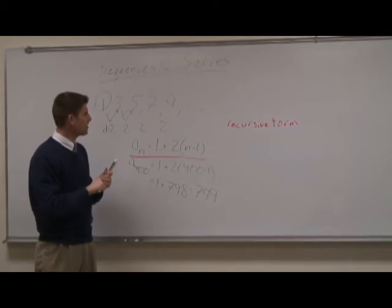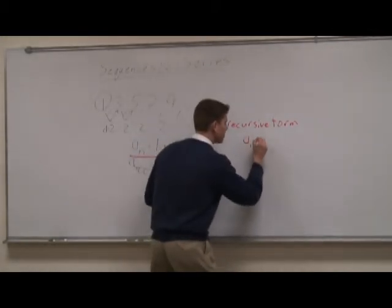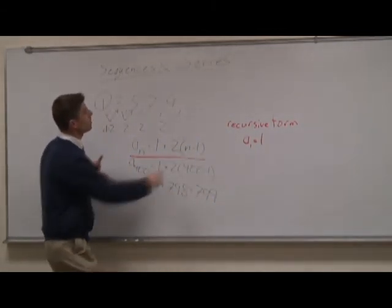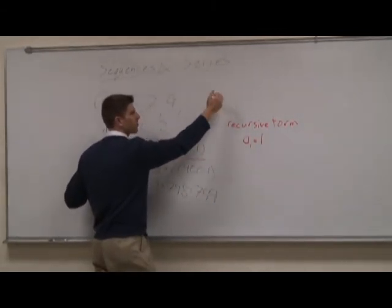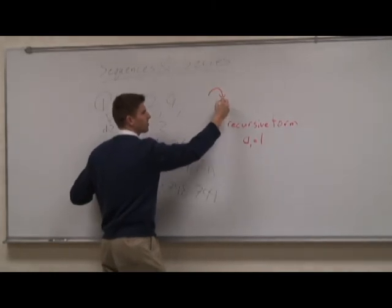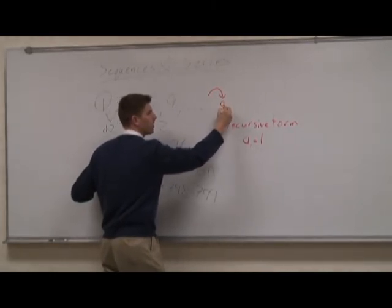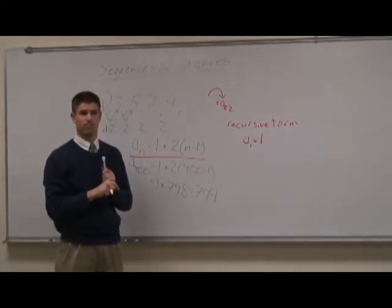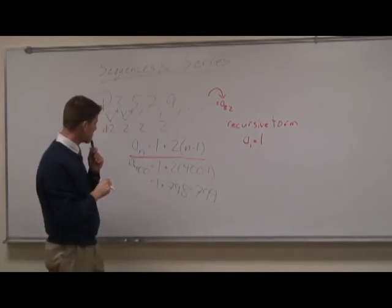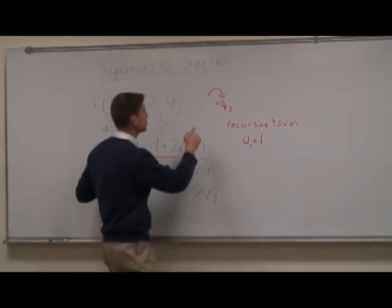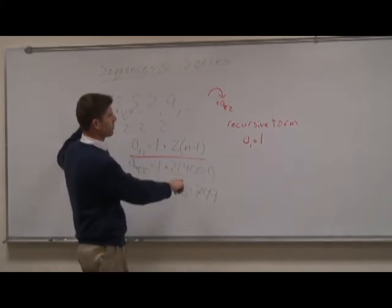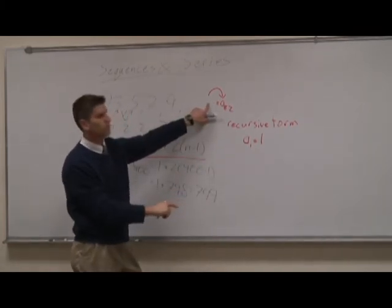Okay. So, if I told you that the first term was 1, how could you tell me, say, the 82nd term, how is the 82nd term related to the 81st term? 2 times n minus 1? Well, that's how you relate it to the very first term. But how would I relate it to the term that was just 1 before?